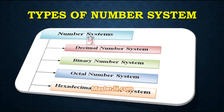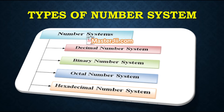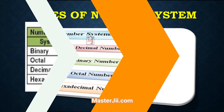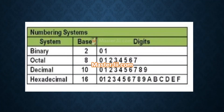There are basically four types of number system: first, decimal number system; then binary number system; third is octal number system; and the fourth is hexadecimal number system. You can also see a table that is shown on your screen.